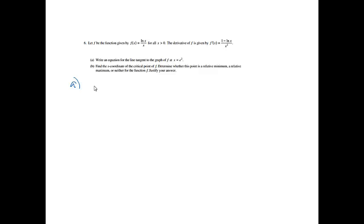Part A: write an equation for the line tangent to the graph of f at x equals e squared. For the equation of a tangent line, y equals mx plus b. The first thing I'd like to find is m, and to get m, I know that's going to be the derivative.